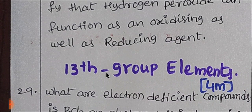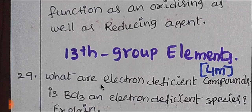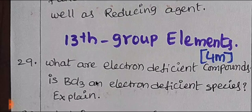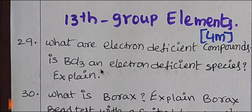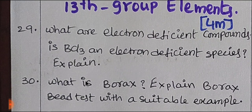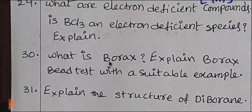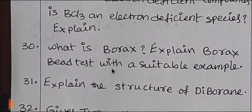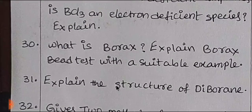Next is the 13th group elements, carrying 4 marks with 3 topics. First topic is electron-deficient compounds — BCl3 is an electron-deficient compound, explain it. Next, what is Borax? Explain the Borax bead test with a suitable example. Next, explain the structure of Diborane. The Diborane structure question is highly important.